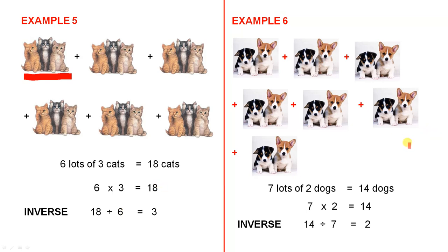And finally, the last example. Seven lots of two dogs equals 14 dogs. Seven twos are 14. Fourteen divided by seven equals two, which is the number in each lot or in each group. Division undoes multiplication.